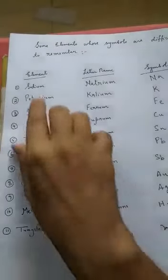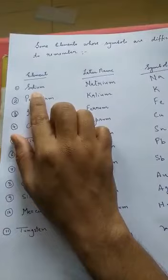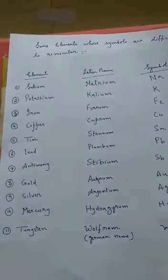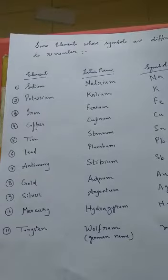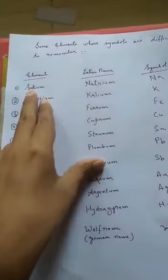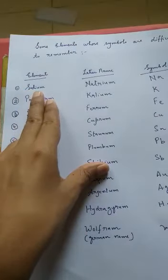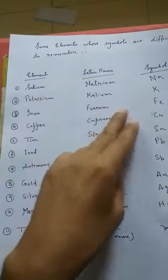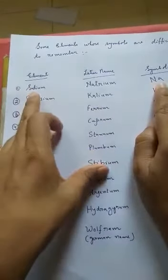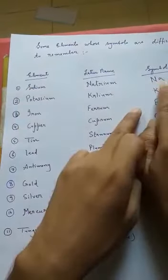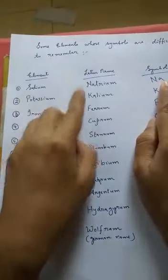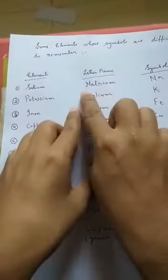Good morning children. Now listen, there are some elements whose symbols are completely different from what we discussed earlier. Look at this element - you will call it sodium, but its symbolic representation doesn't have S or O. It is Na. Why? Because sodium's Latin name is Natrium, and when you spell Natrium, the word starts with N.